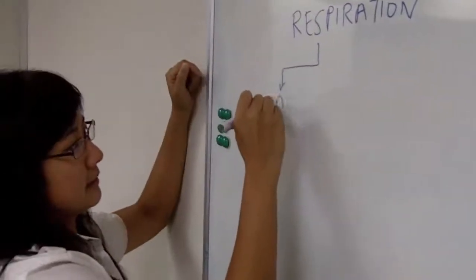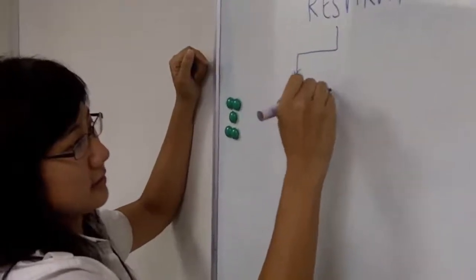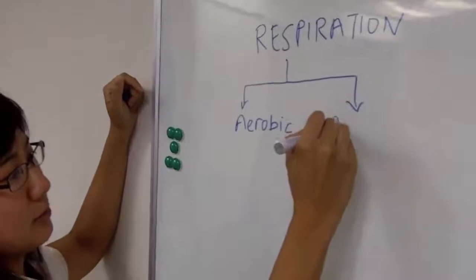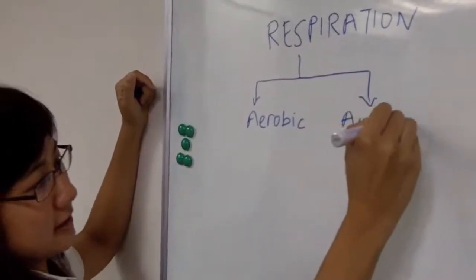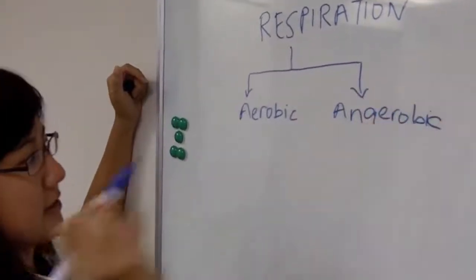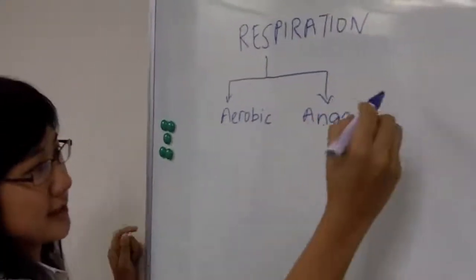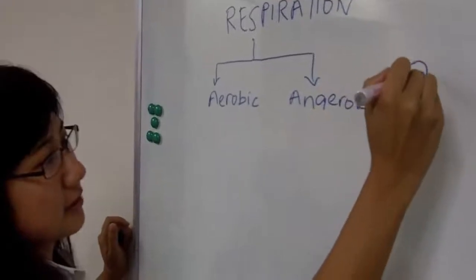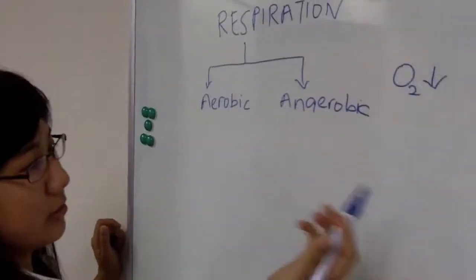There is aerobic respiration, which you and I are doing under normal conditions, and anaerobic respiration, which we do under levels of stress. This happens when oxygen levels are low or deficient.